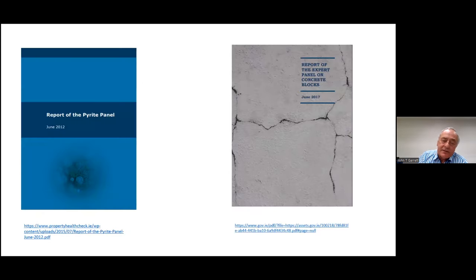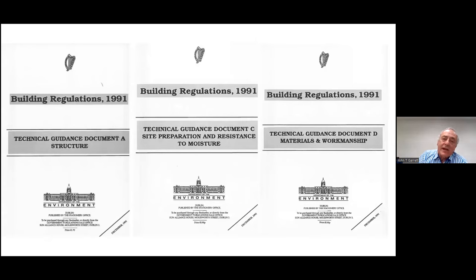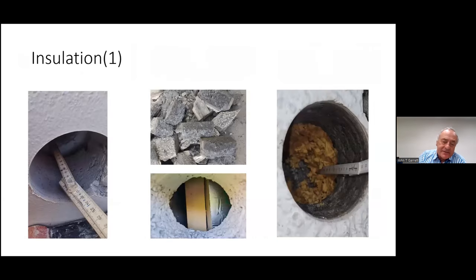This is then compared to the very different pattern of cracking you get on the right-hand side, taken from IS465. There's a tremendous amount of information available: the report of the Pyrite Panel relating to concrete floors was published in 2012, and the report of the Expert Panel on Concrete Blocks was produced in 2017 — both very useful references to read. The building regulations — Technical Guidance Document D relating to structure, Technical Guidance Document C relating to site preparation and resistance to moisture, and Technical Guidance Document D relating to materials and workmanship — are also relevant.